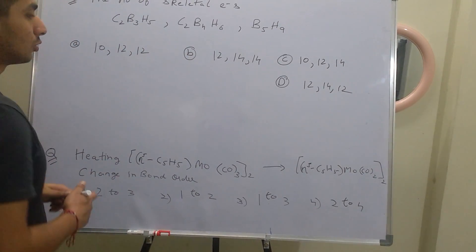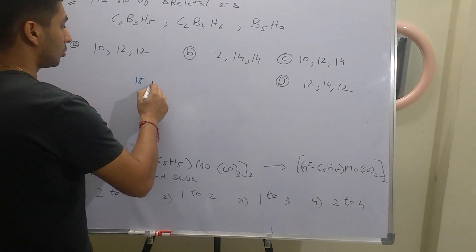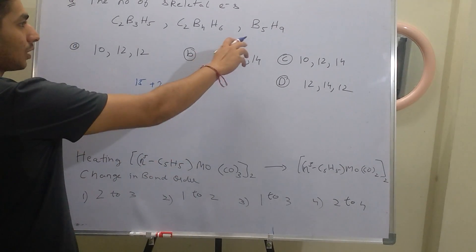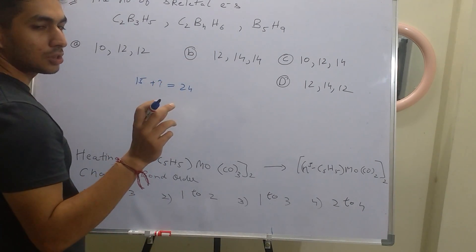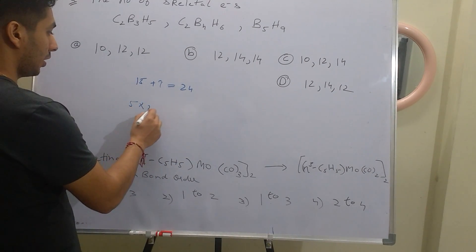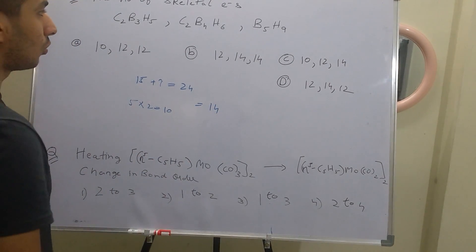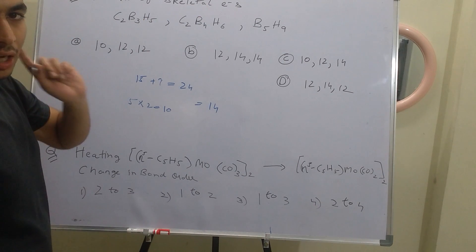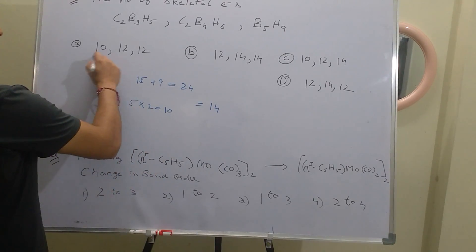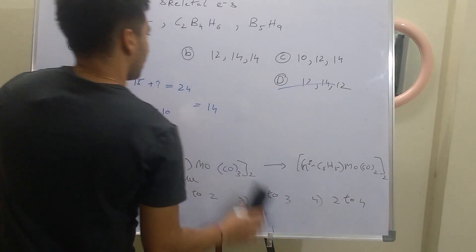Let's solve B5H9. Total valence electrons: 5 boron atoms give 15, plus 9 hydrogens gives 24 valence electrons. For boron, a non-transition element, we take 5 × 2 = 10. So 24 − 10 = 14 skeletal electrons. Remember, these are skeletal electrons, not pairs — if they ask for pairs, divide by 2. We can now eliminate options A and D, leaving only B and C.